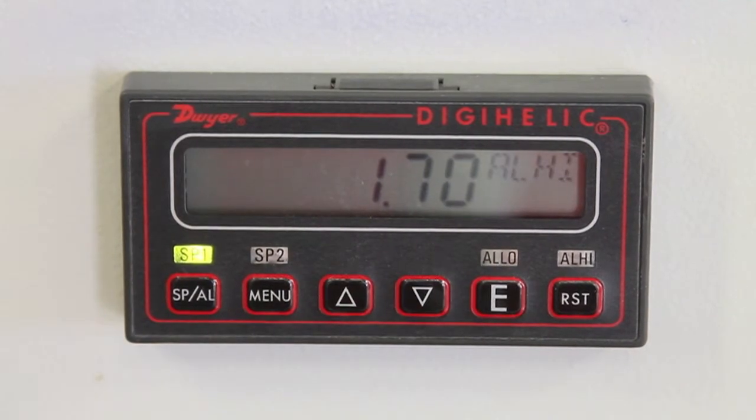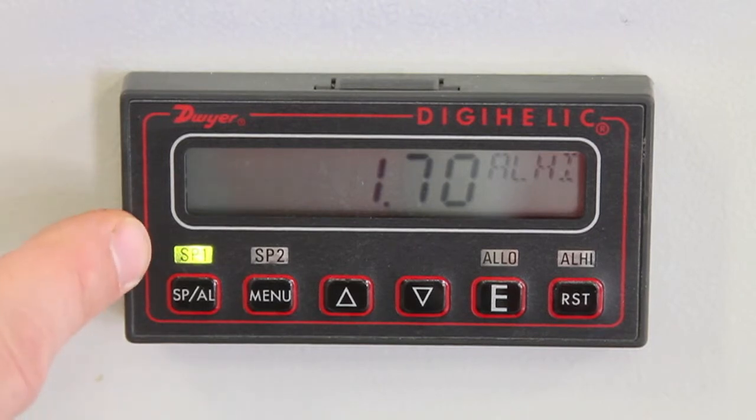We will now start the collector again. The SP1L light is illuminated and it should stay illuminated until we reach our high set point of 1.70. Remember that we do have a 30 second delay before it will call for water. Once it calls for water, it will increase in pressure until it reaches that level and then turn off the fill valve as well as the SP1L light.